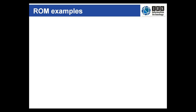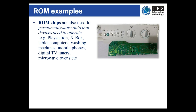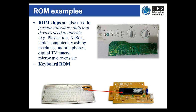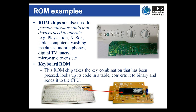ROM chips are also present in devices like game consoles, tablet computers, mobile phones and peripheral devices like keyboards and mice. So-called smart appliances like microwave ovens and washing machines also have ROM chips; however these are more likely to store the entire operating system for the device. One interesting application of ROM occurs in your keyboard — this ROM chip knows which key has been pressed, as well as any modifier keys like Shift, Control, Alt, etc., and looks up the appropriate code to send to the CPU.